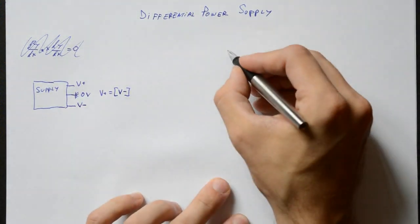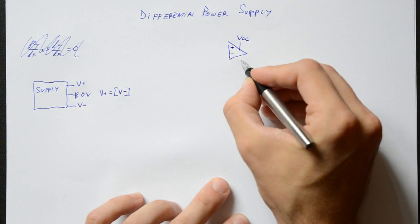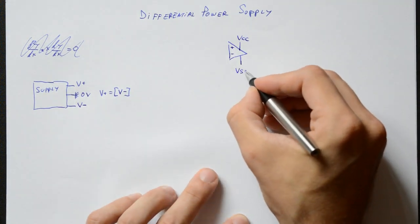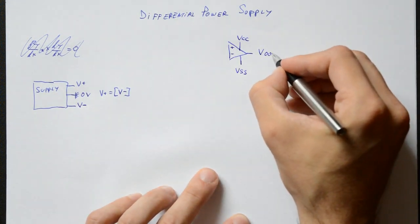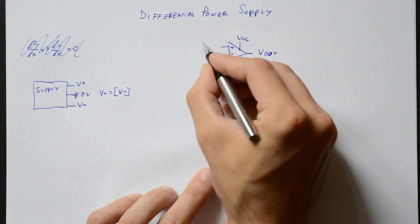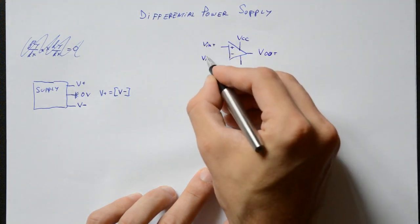But why? Well, this supply is most common in op-amp circuits, whether it's some sort of signal processing or power output. But why bother complicating things? Well, there are two main reasons.